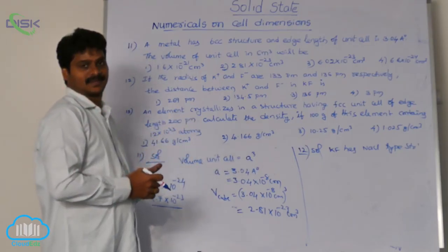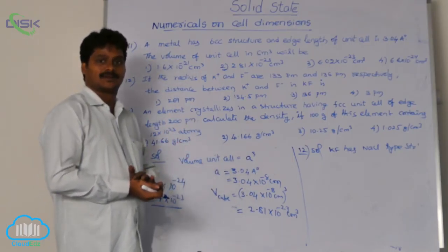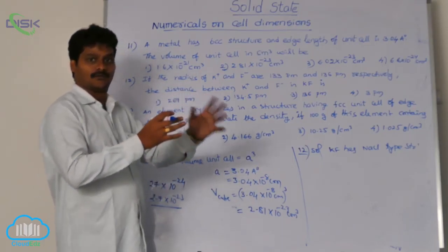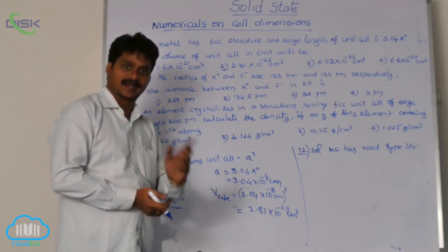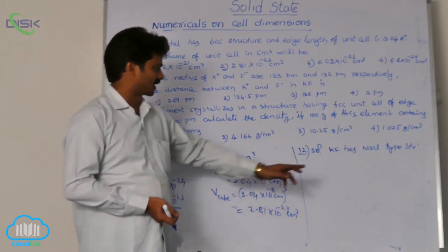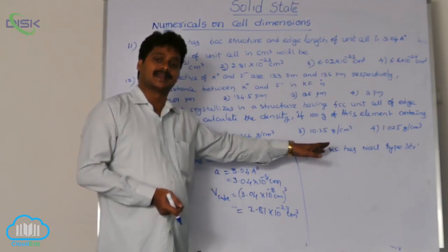Earlier, I discussed the structure of NaCl. For structure of NaCl, you know, where the atoms are present, cations are present at edge centers and body center. Whereas, anions are present at corners and face centers. Anions are present at corners and face centers. Cations are present at edge center and body center.